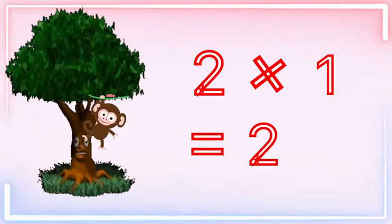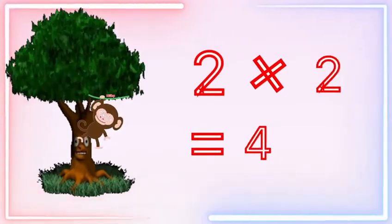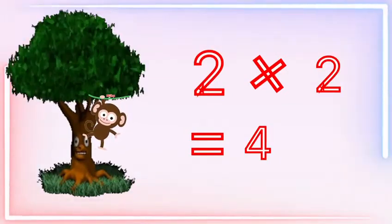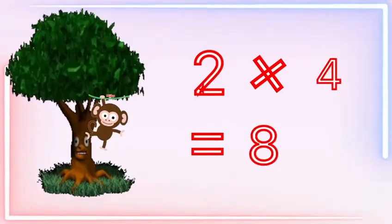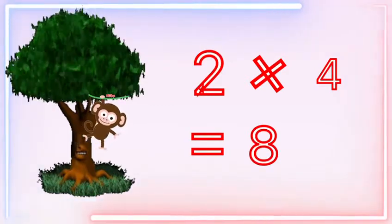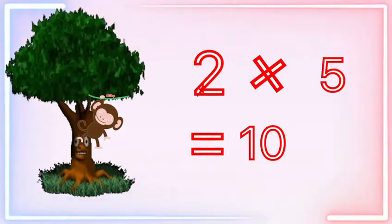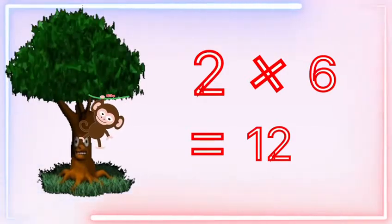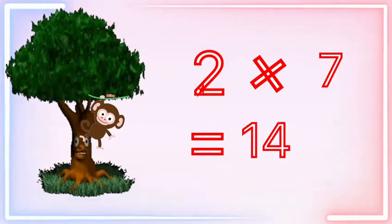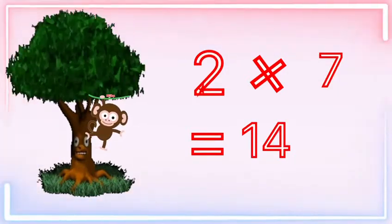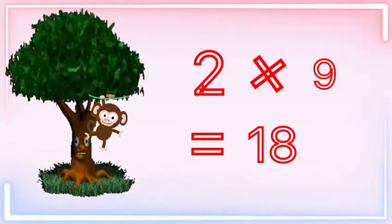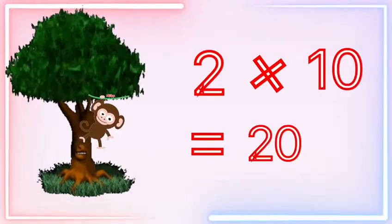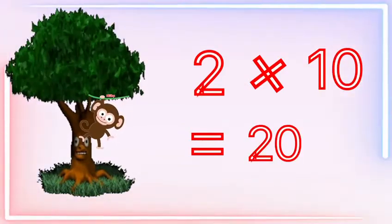Let's get started writing. 2 × 1 is 2. 2 × 2 is 4. 2 × 3 is 6. 2 × 4 is 8. 2 × 5 is 10. 2 × 6 is 12. 2 × 7 is 14. 2 × 8 is 16. 2 × 9 is 18. 2 × 10 is 20.